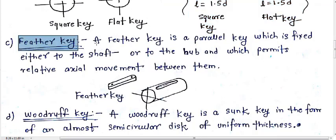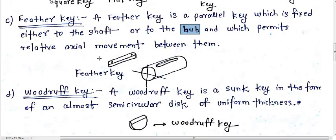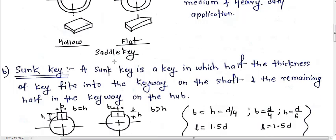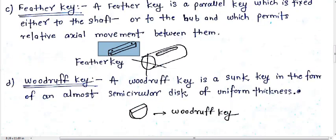The next type of key is the feather key. A feather key is a parallel key which is fixed either to the shaft or to the hub, and it permits relative axial movement between them. This is different from the sunk key or saddle key because in those types the key is not fixed to the shaft or hub, but in the feather key it is fixed to either the shaft or the hub.